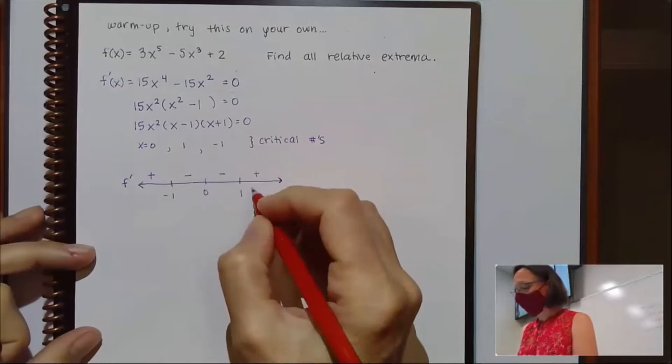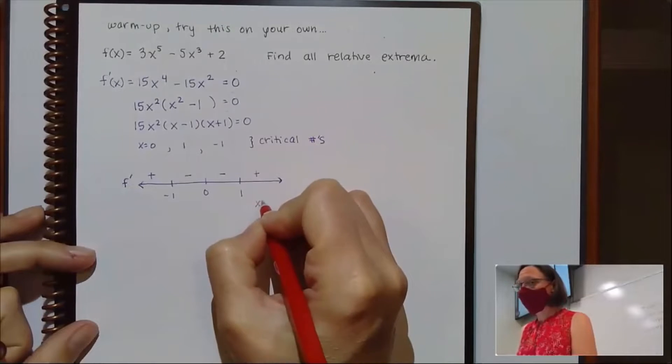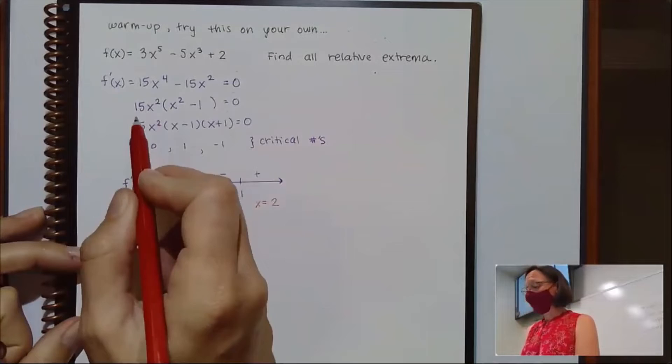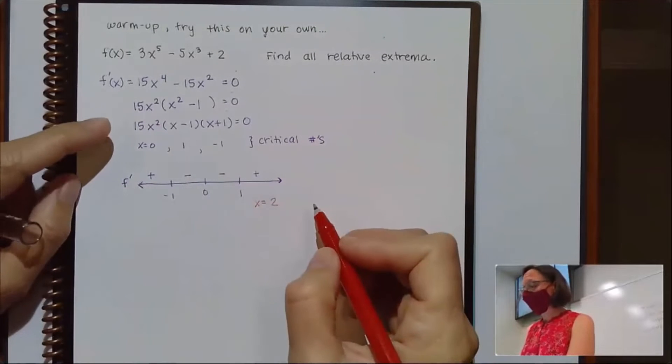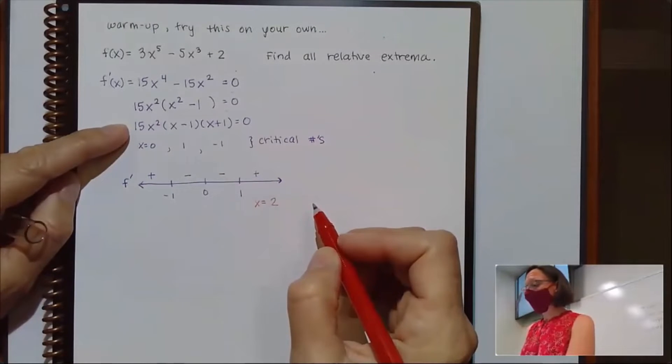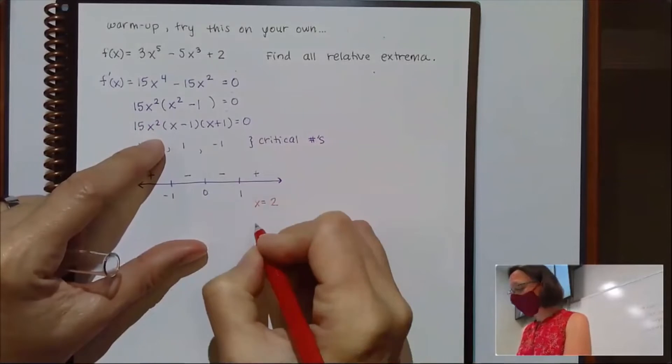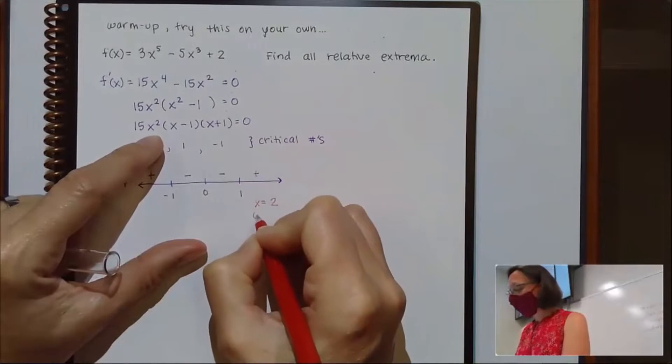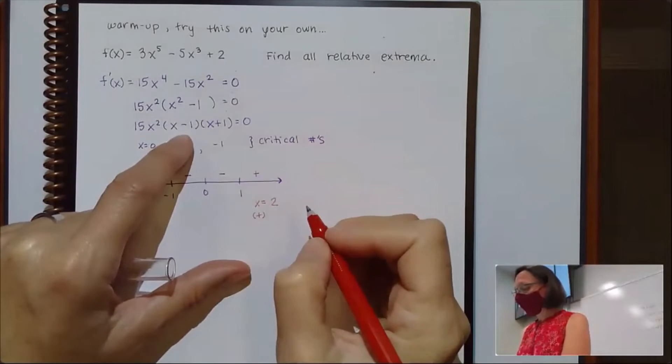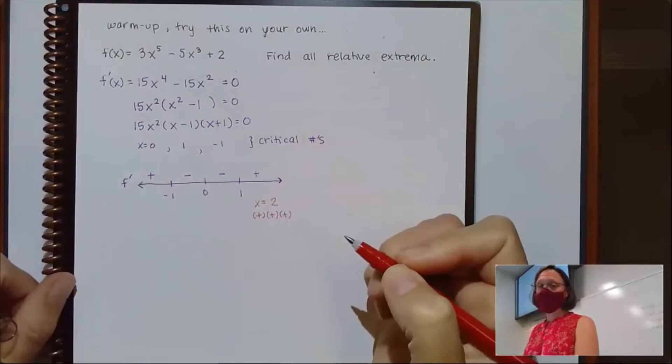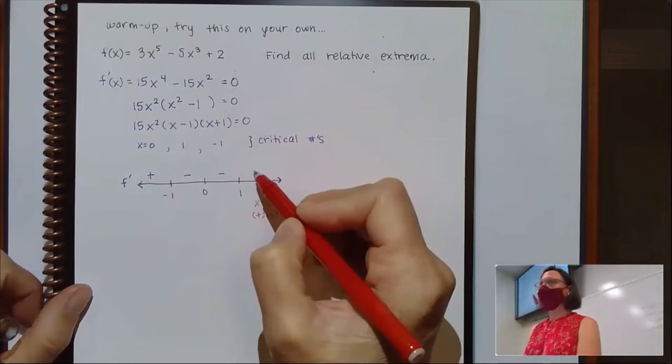So if I pick the test point over here, like 2, and I plug it into my derivative, 15 is always positive. x² doesn't matter what I plug in, that's going to be positive. So I've got a positive. 2 - 1, that's positive. And 2 + 1 is also positive. So there's my positive.